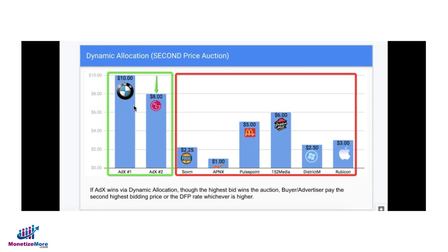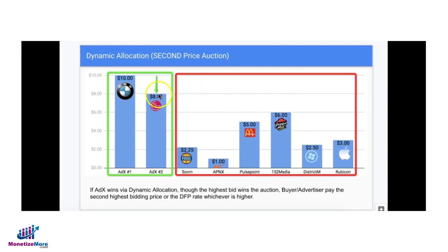Obviously in this scenario Ad Exchange wins because $10 is the highest bid available. But because we're operating on a second price auction, this advertiser — although they bid $10 — will check the second highest available bid within Ad Exchange and compare that with the highest competing line item in DFP. The second highest bidder within Ad Exchange is LG at $8, and the highest bid in DFP is from 152 Media with Pizza Hut at $6. Since LG's $8 is higher, BMW will serve the ad but pay $8, not $10.